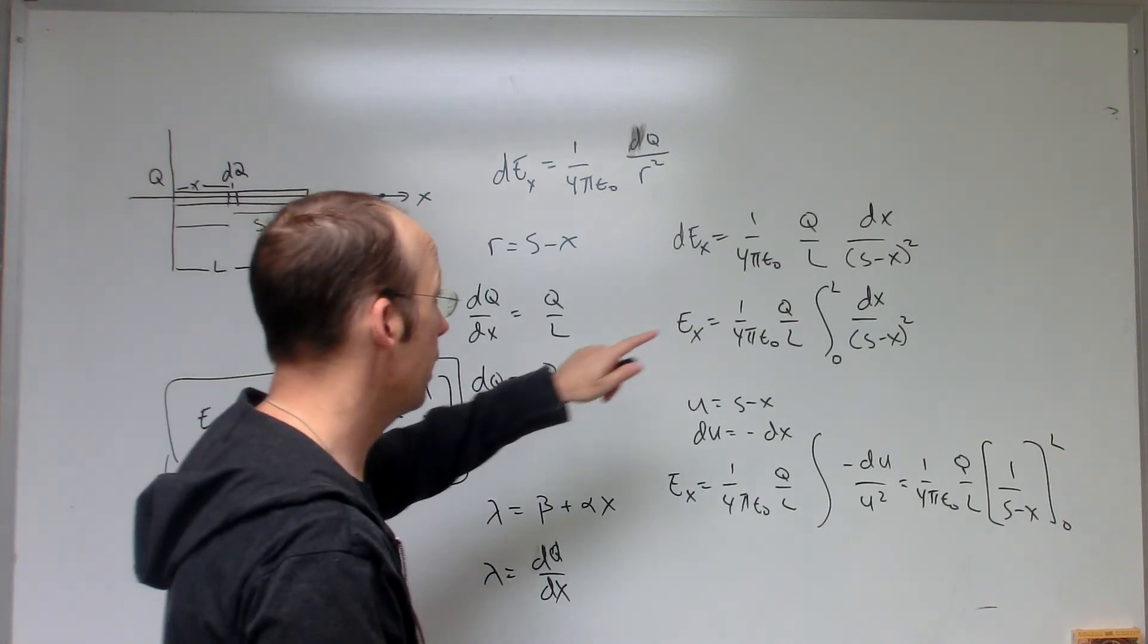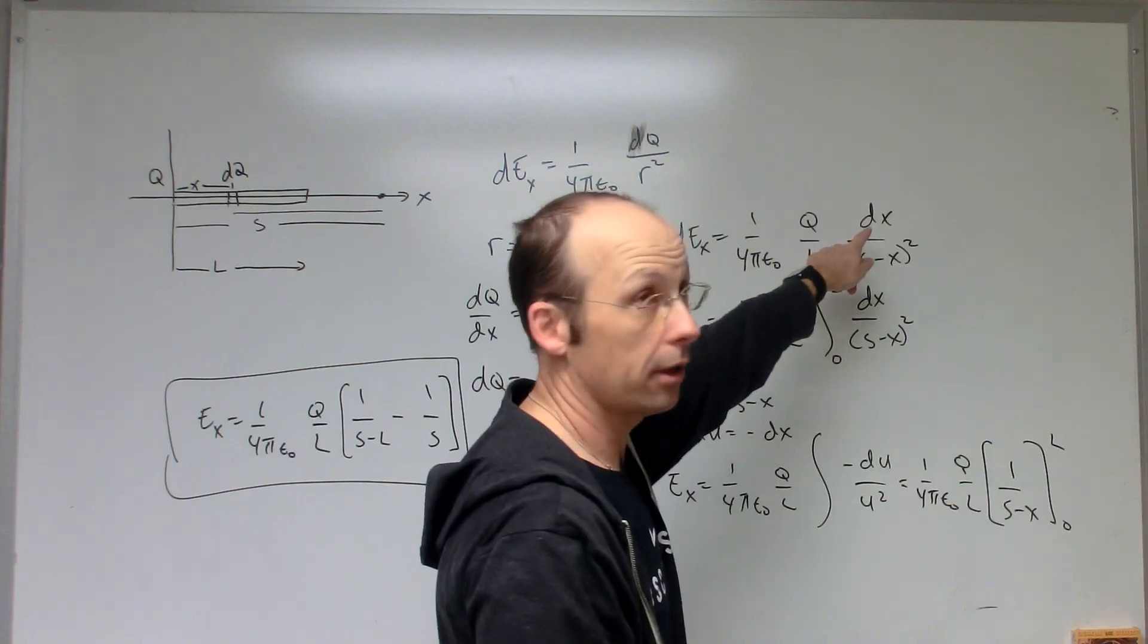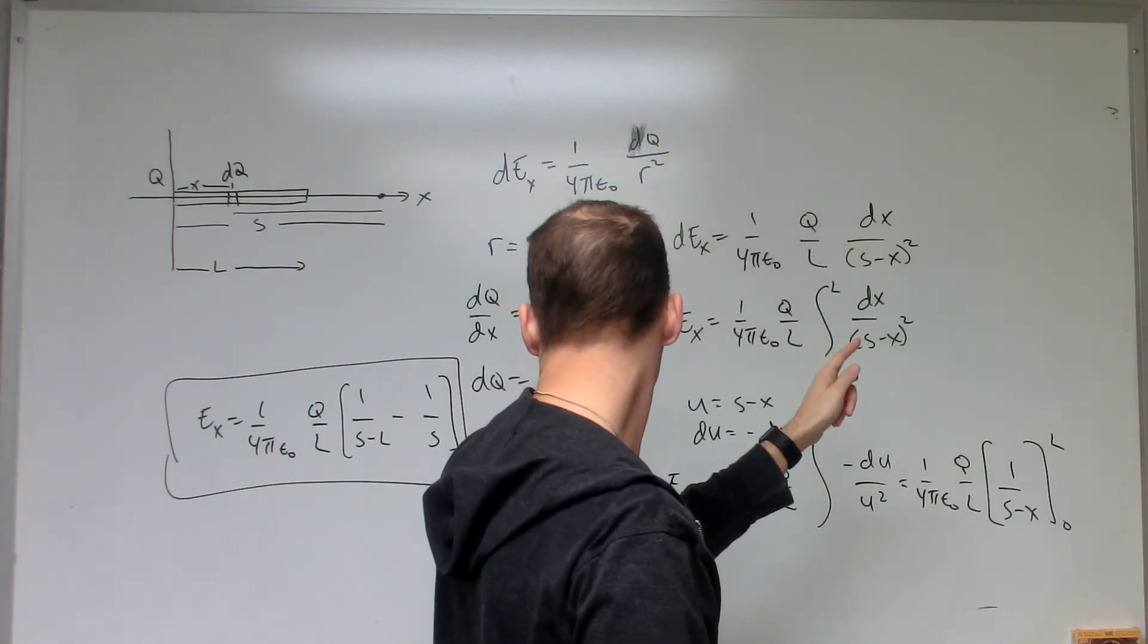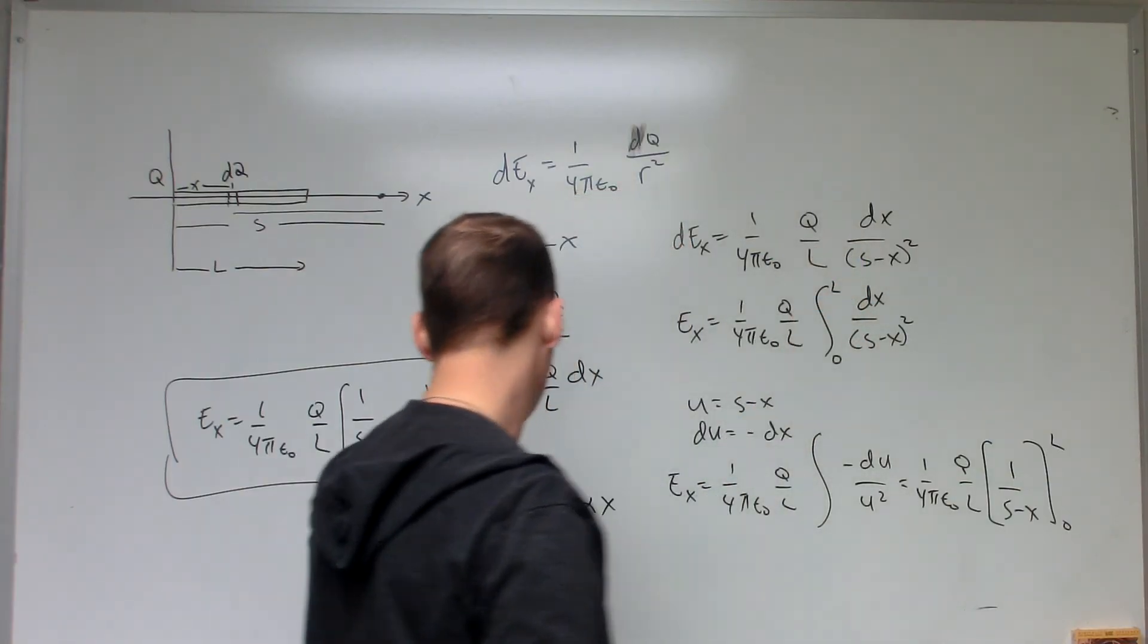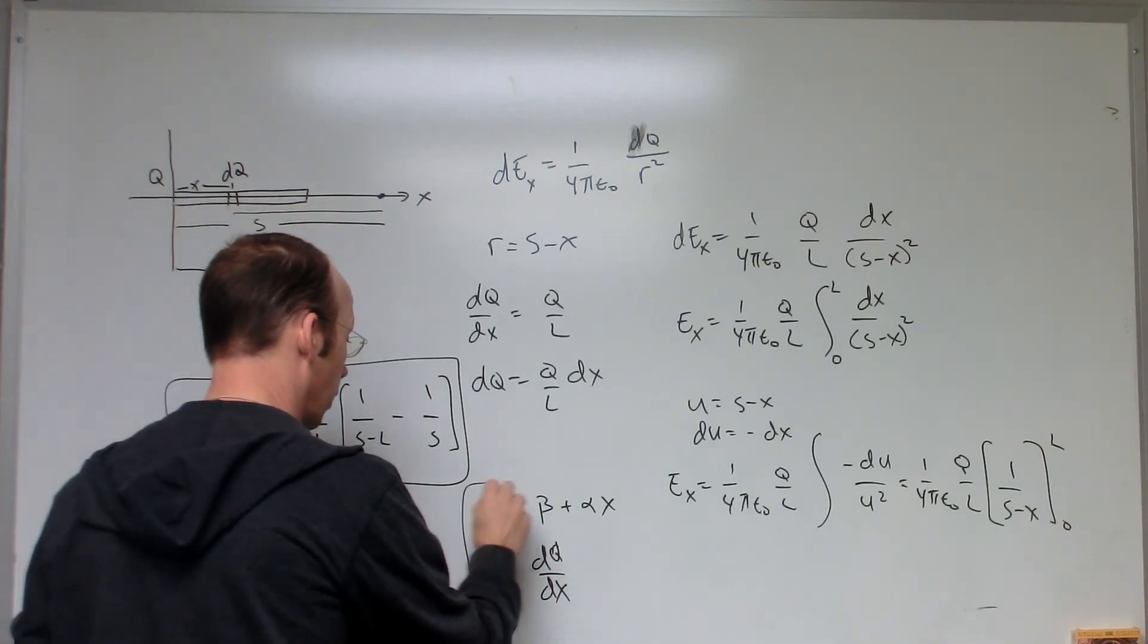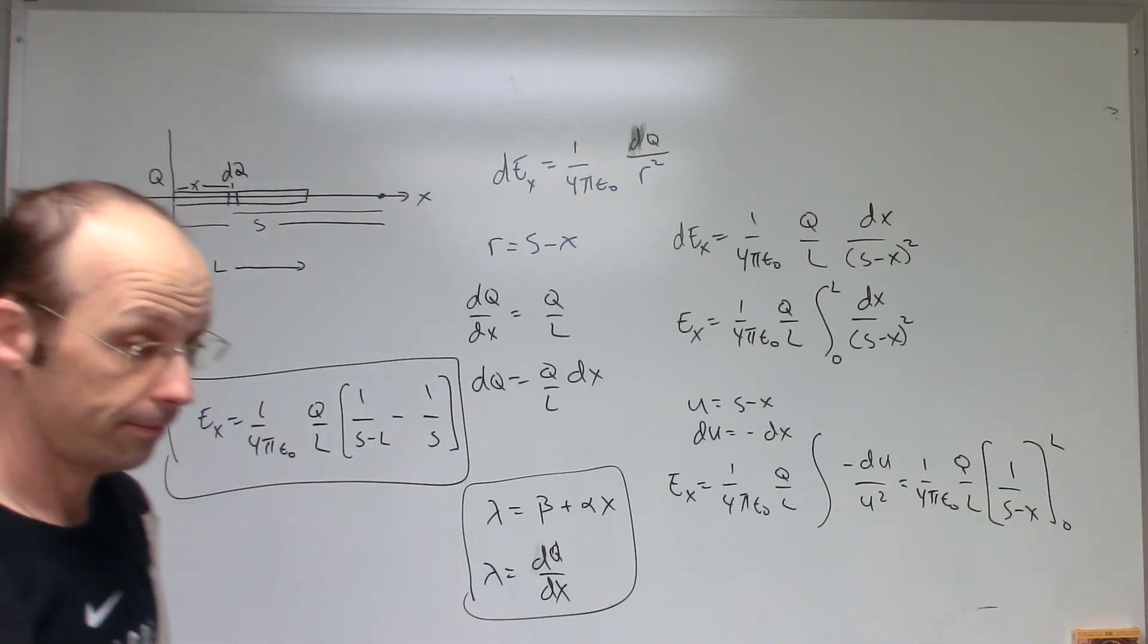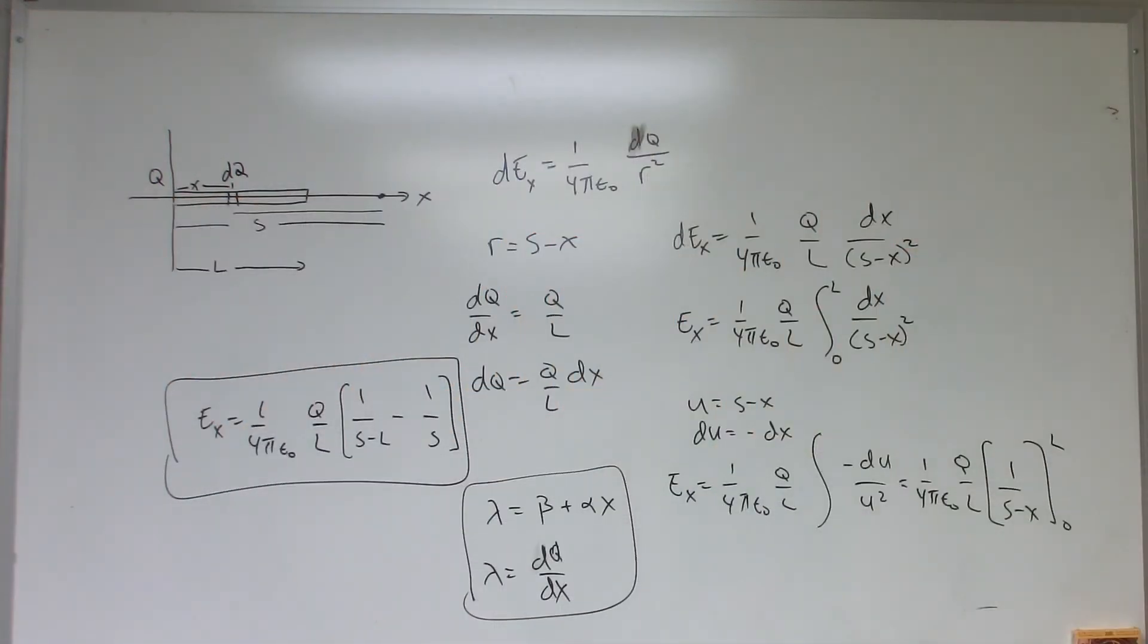In this case, I would have to, up here, I wouldn't have this Q over L DX. I would have lambda DX, and now that depends on X. So it's a little bit harder integral, but that's something that we're going to do in the next part numerically. Okay, we're going to have to have values for that. Now, I just made up that function just for fun. Okay, so that's that. So that's what we're going to do in the next part.